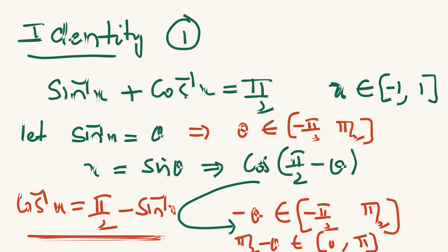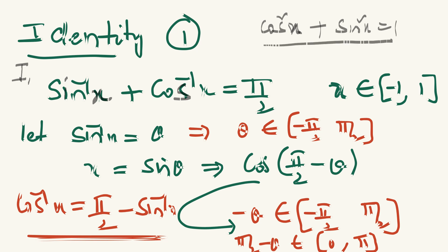Before concluding, I would like to give one identity in inverse trigonometric functions. Identity 1: sin⁻¹(x) + cos⁻¹(x) = π/2. We have regular identities like cos²x + sin²x = 1 in trigonometry, but in inverse trigonometry we get sin⁻¹(x) + cos⁻¹(x) = π/2. There are many switchovers: sin⁻¹(x) = π/2 - cos⁻¹(x) and cos⁻¹(x) = π/2 - sin⁻¹(x).